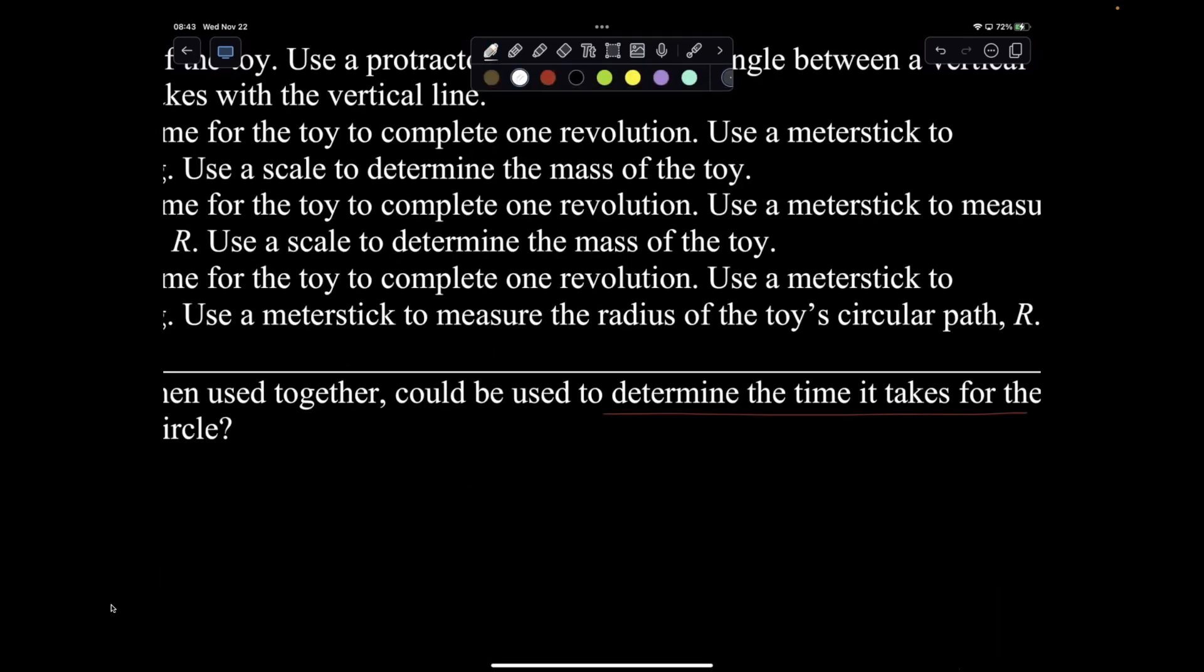If you're trying to determine the time it takes to complete one revolution, that's period, so that's 2πr over v. Now v comes from force centripetal, which is mv squared over r.